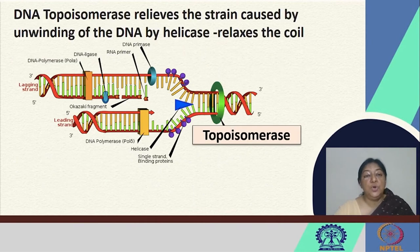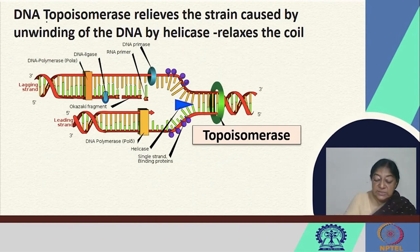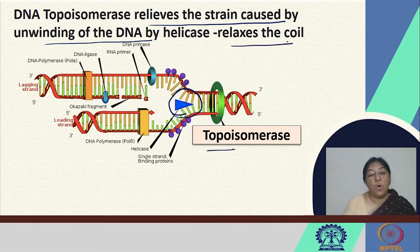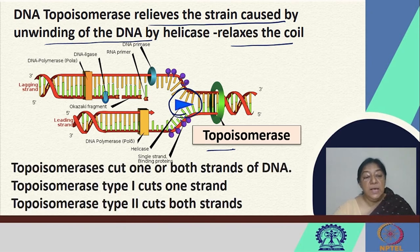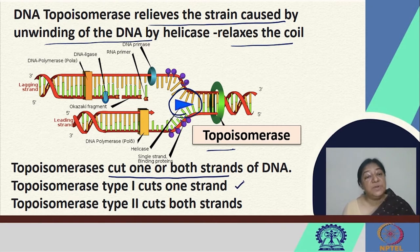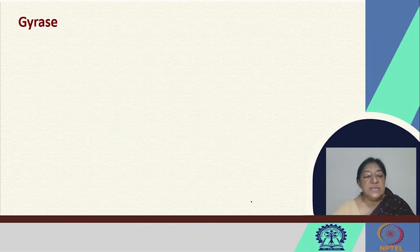Another protein called topoisomerase relieves the strain caused by the unwinding of the DNA. Helicase results in unwinding of the DNA, and the topoisomerase helps to relax the coil as it is unwound by the helicase molecule. Topoisomerase is an enzyme that cuts either one strand or both strands of DNA — topoisomerase type 1 cuts only one strand, while topoisomerase 2 cuts both strands.